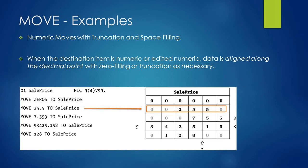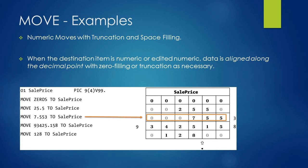When moving 25.5 to SALE-PRICE, digits are aligned at the decimal point. As you can see in the declaration of SALE-PRICE, the decimal is after the fourth digit. So the fourth digit is filled with 5, the third digit with 2, and the first and second digits are filled with zeros. For the fractional part, 5 is placed on the fifth position and 0 on the sixth position.